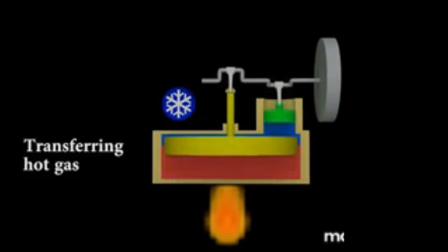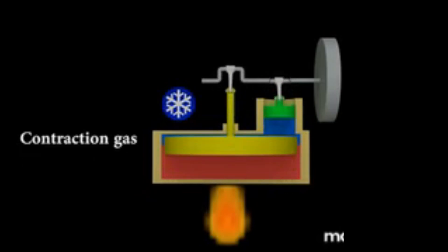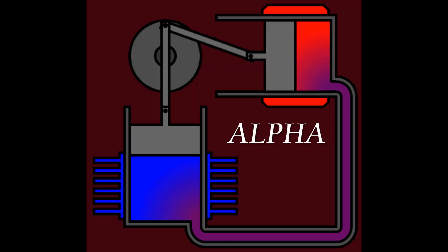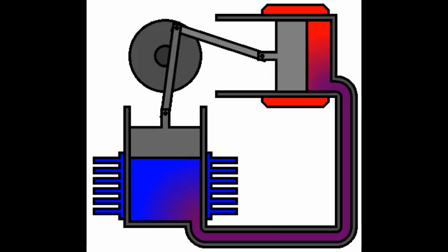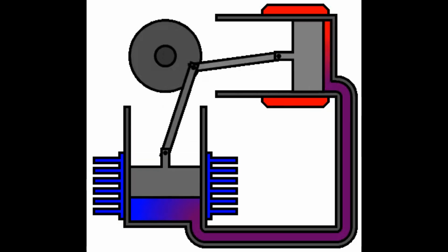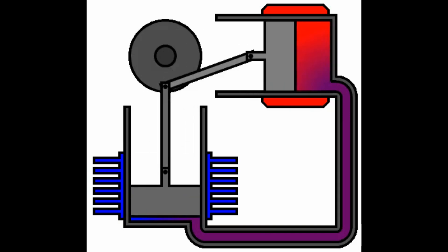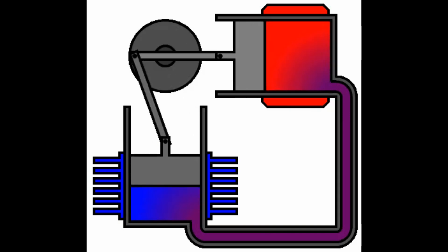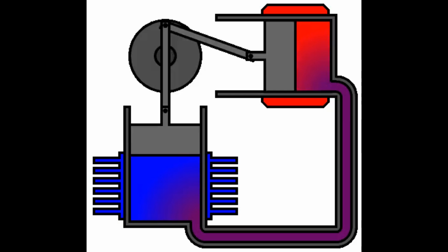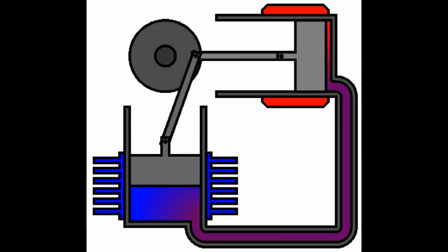The first type of Stirling engine is an alpha engine. It has two pistons that are sealed to their respective cylinders and has the highest horsepower to volume ratio of all the Stirling engines. It is plagued with seal problems on the hot side of the engine, but other than that it's a pretty simple design.